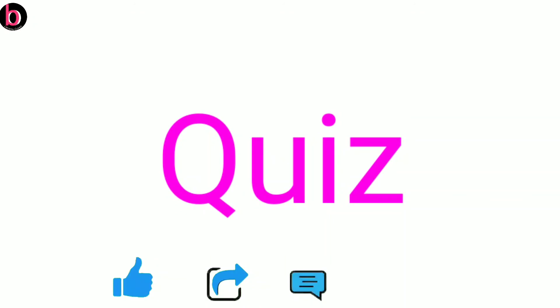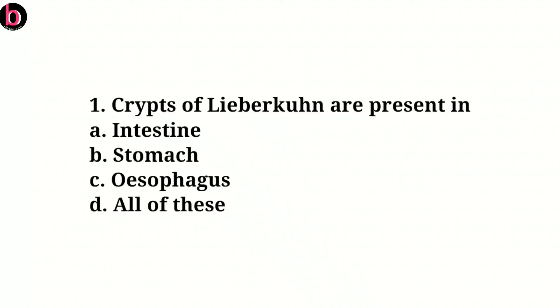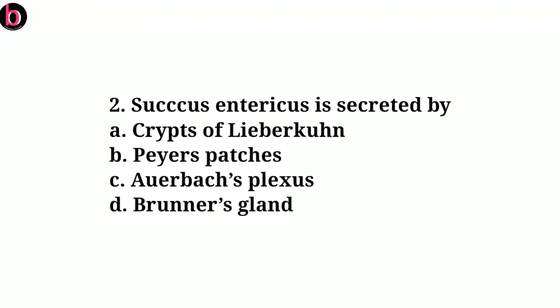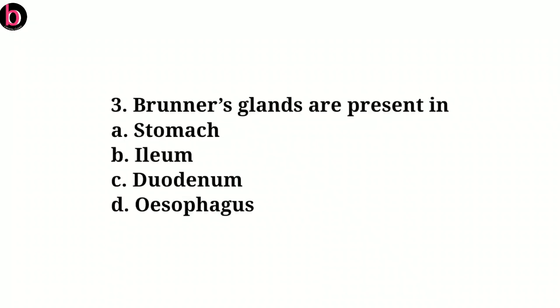Now for the MCQs related to this video — write your answers in the comments with proper reasoning. Question 1: Crypts of Lieberkühn are present in — intestine, stomach, esophagus, or all of these? Question 2: Succus entericus is secreted by — crypts of Lieberkühn, Peyer's patches, Meissner's plexus, or Brunner's gland? Question 3: Brunner's gland are present in — stomach, ileum, duodenum, or esophagus?